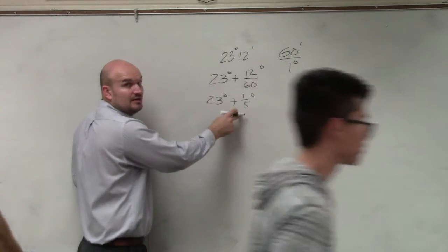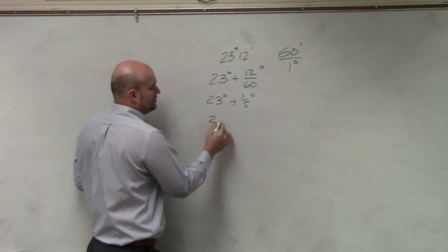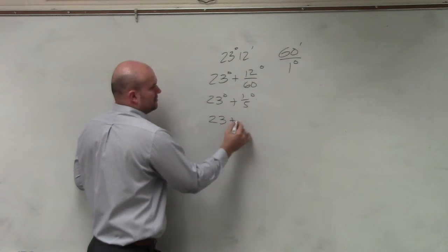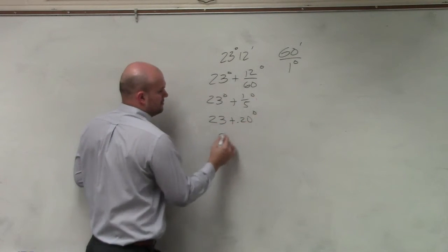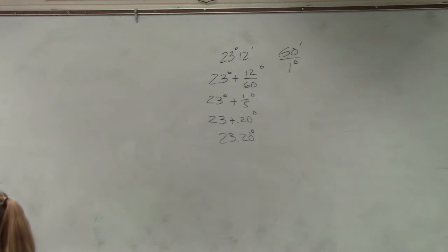And therefore, we know that that is going to be 0.20, or you could use your calculator. And there you go, 23.20 is the decimal equivalent of that degree.